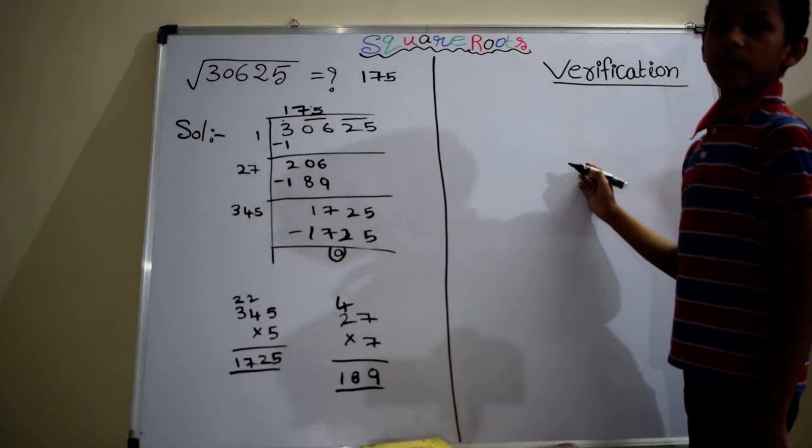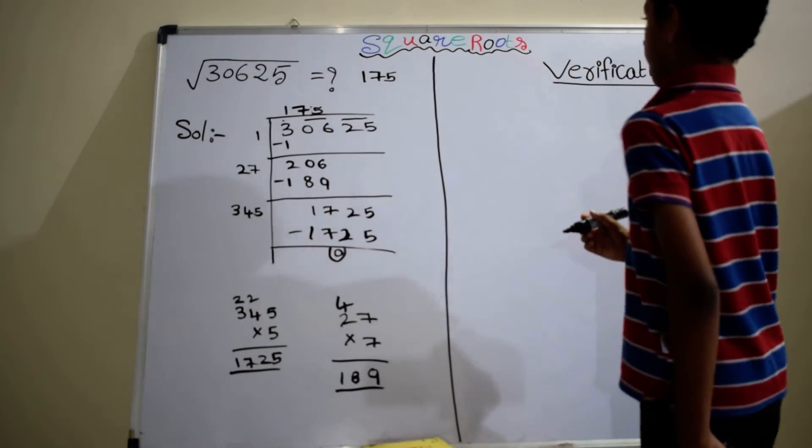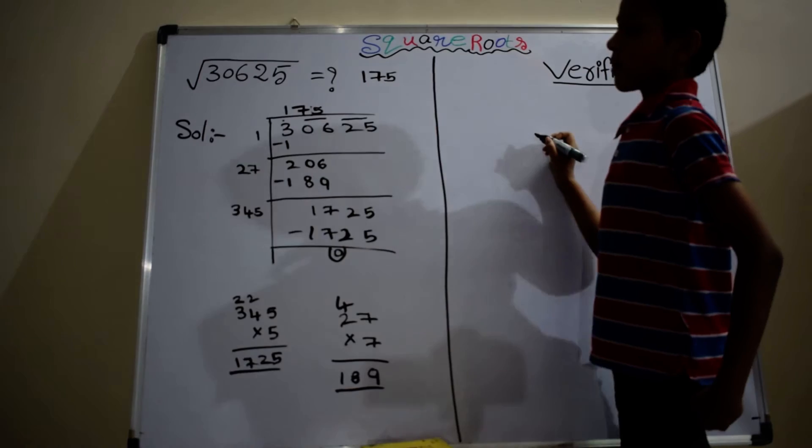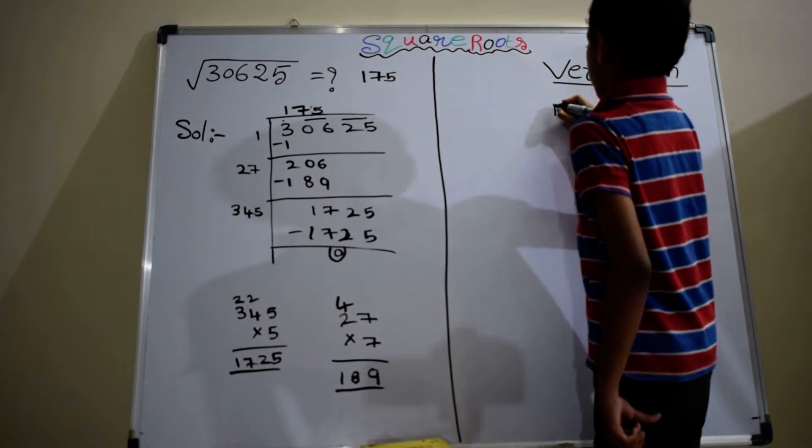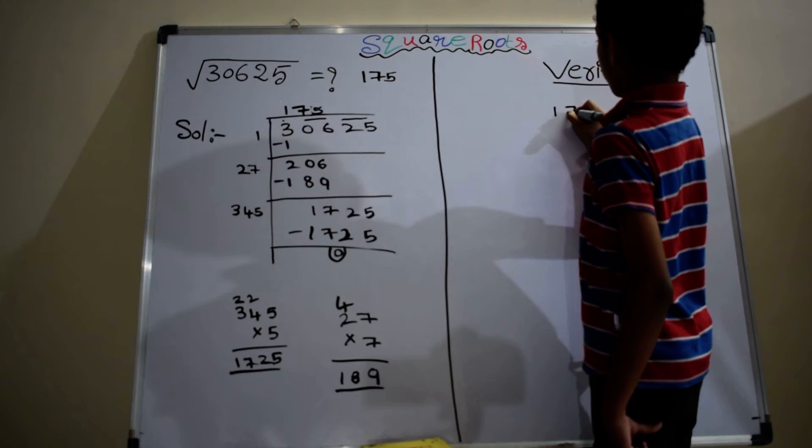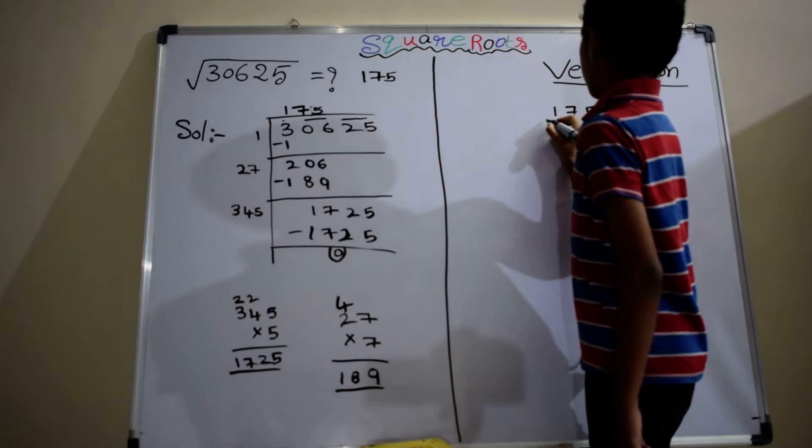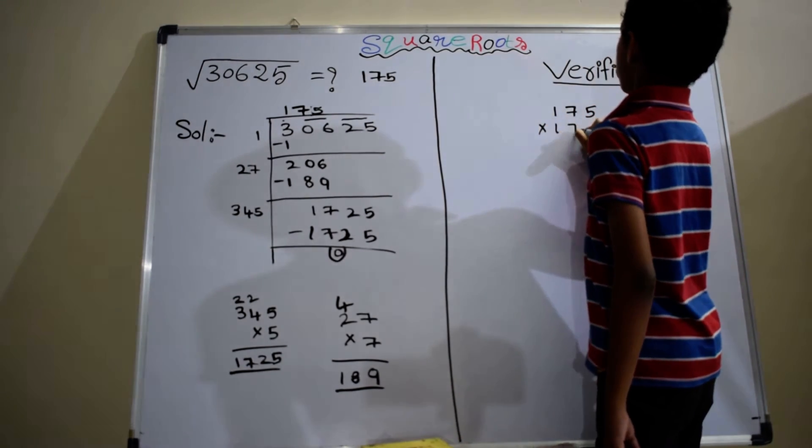Now, we are identifying whether it is wrong or right. We multiply 175 into itself. 175 into 175.